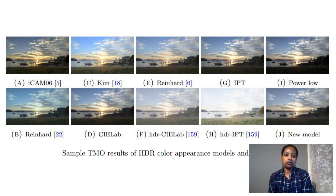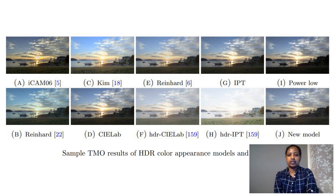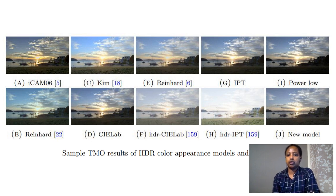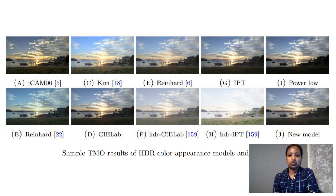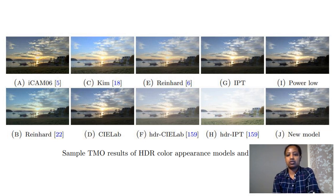The ITU recommendation BT.2390 proposes a simpler sigmoidal-based tone mapping operator computed depending on the black level and white level of the targeted SDR display. The idea is to keep as much detail as possible in the mid-tones and clip the shadows and highlights. However, such solutions assume that every HDR content has highlights and shadows which don't contain important details for the color appearance of the entire scene, which I find is not always true.